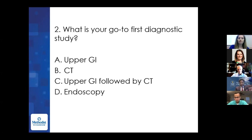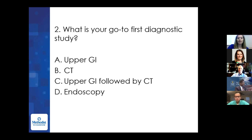Poll results show 55% chose upper GI, followed by CT scan. This is an interesting point — when you have that ED non-contrast CT scan, what do you do with that information? Getting both is becoming more common. Typically the gold standard discussed is upper GI. Upper GI followed by CT scan really gives you the best information to make an informed decision. Does anyone have comments if they've ever done anything differently?